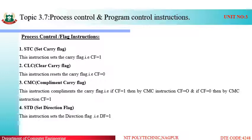Next is CLC — Clear Carry Flag. This instruction will reset the carry flag, making the carry flag bit equal to 0, meaning no carry is generated. Similarly, there is the Complement Carry Flag instruction. Complement carry flag means if the carry flag contains 1 it will be complemented to 0, or if the carry flag contains 0 it will be complemented to 1.